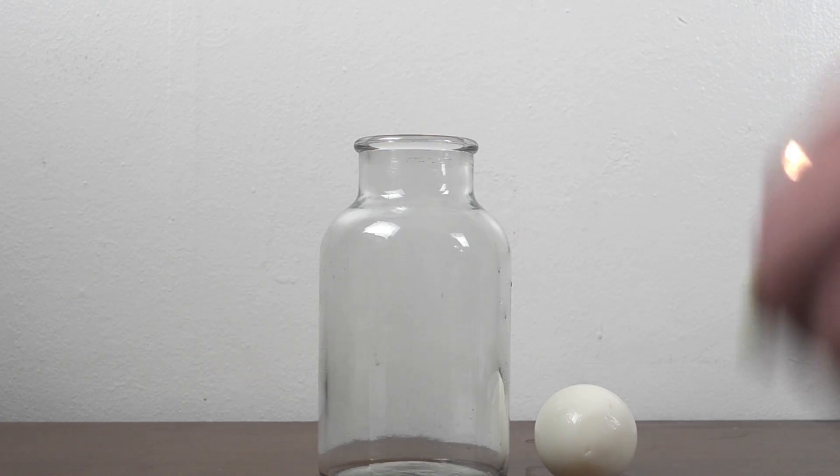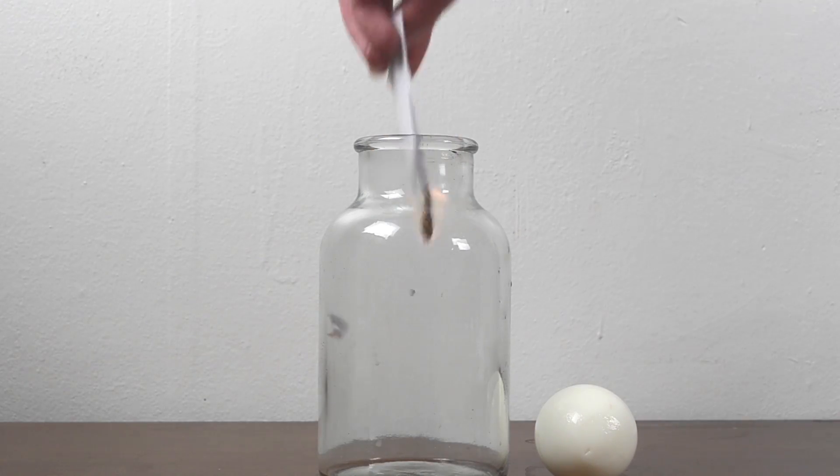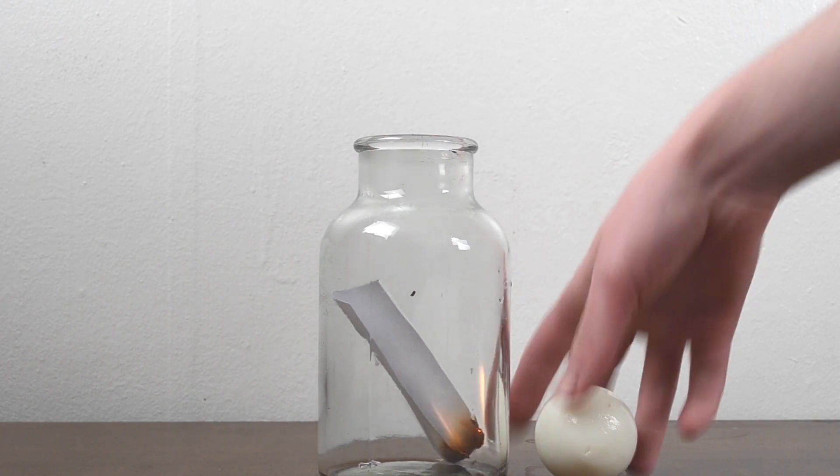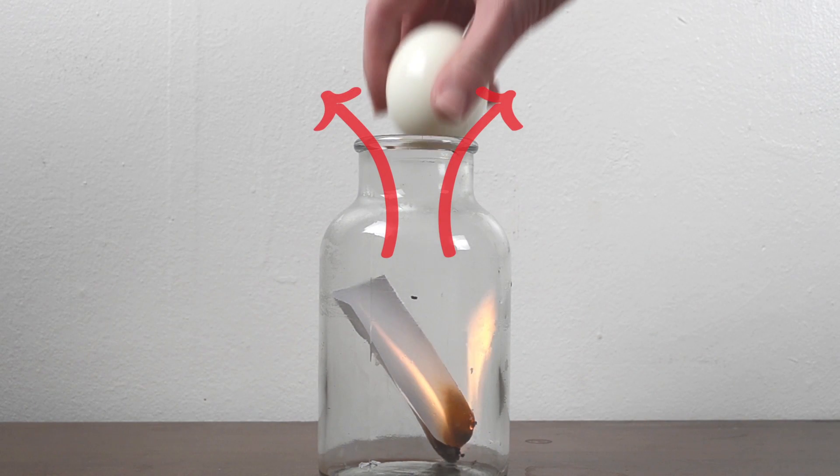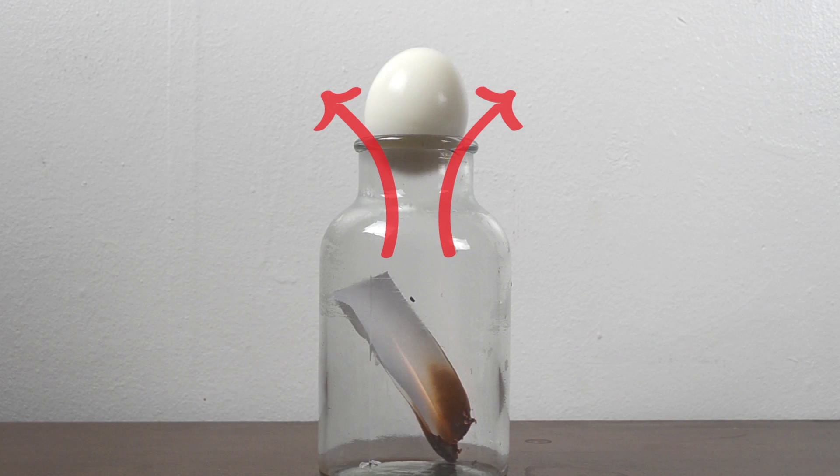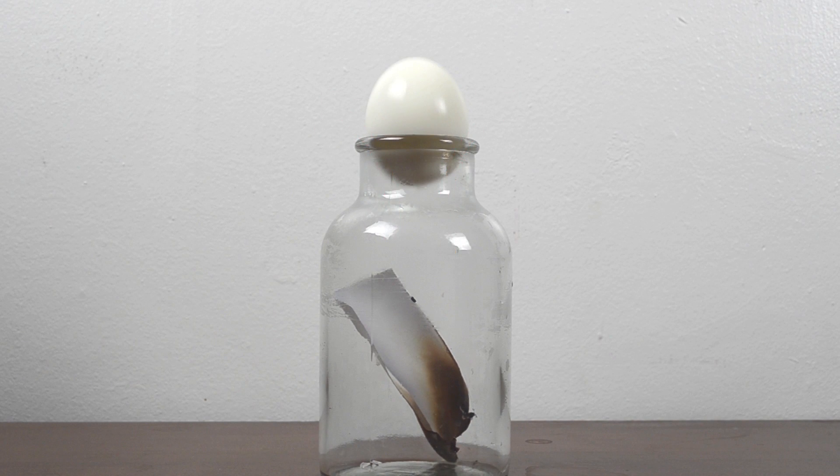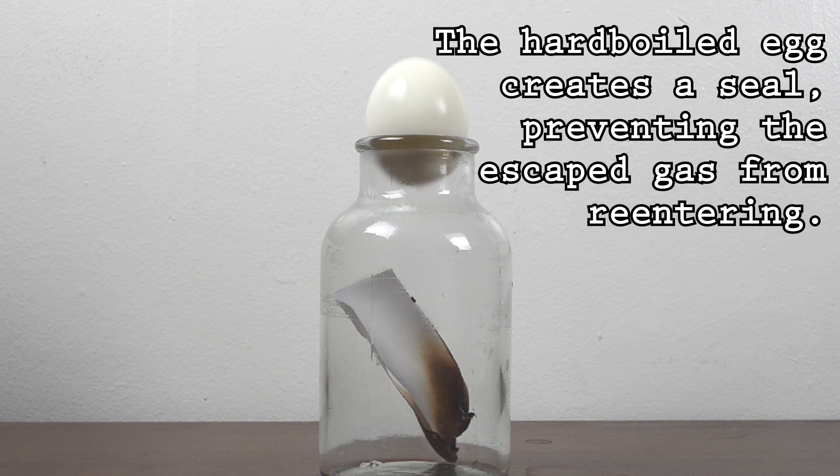But when you drop in the burning paper, you heat up the air inside. Because the temperature is increasing, the gas expands and the volume increases. And this pushes the air out past the sides of the egg, causing it to shake. This is important because it means we've decreased the number of molecules inside the jar.